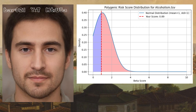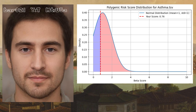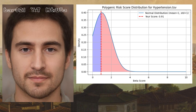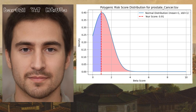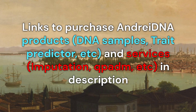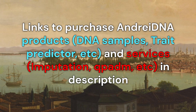He scored particularly low for odds of alcoholism, Alzheimer's, anxiety disorder, asthma, hypertension, mental disorders, and prostate cancer. You can purchase his genome in 23andMe format from the link in the description of this video.